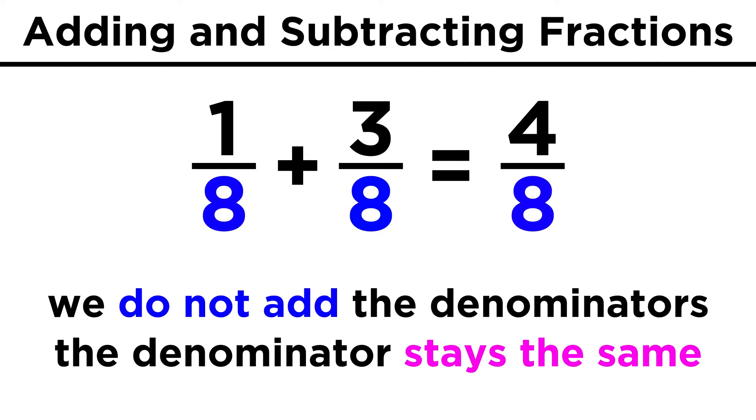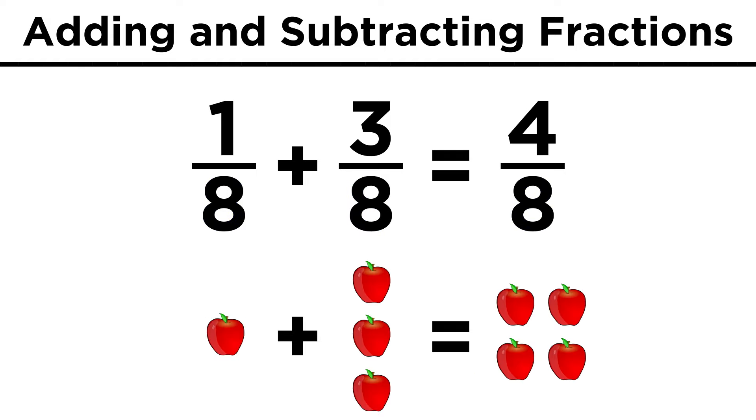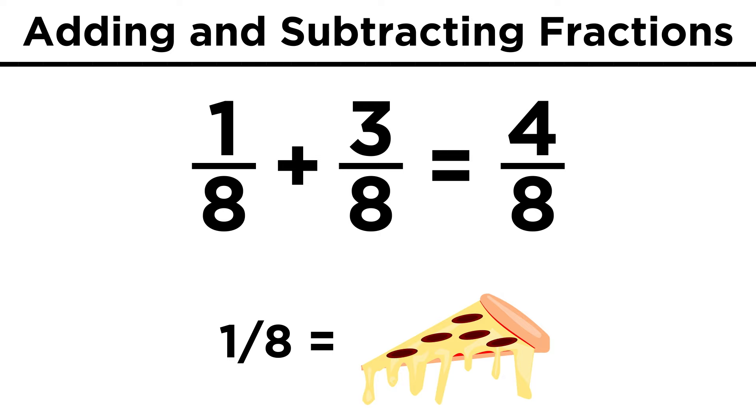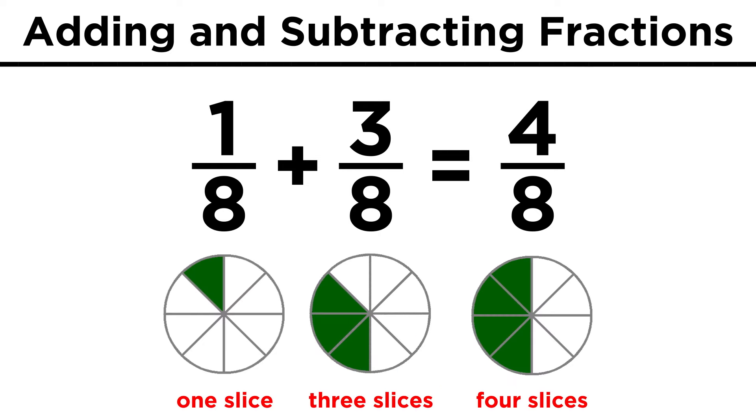It's important to note that when adding fractions, we do not add the denominators. Just like we would say one apple plus three apples equals four apples, the same logic applies here. We can imagine an eighth as a slice of pizza, and one slice plus three slices equals four slices. The denominator reports the magnitude of the fraction, so this won't change as we add and subtract.